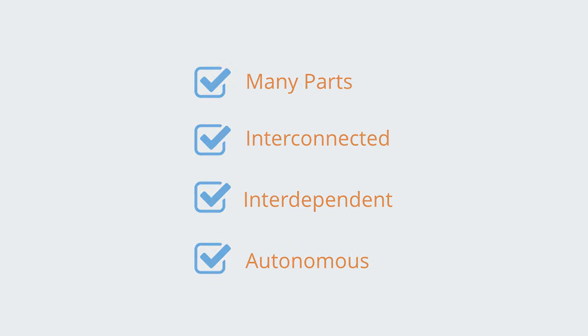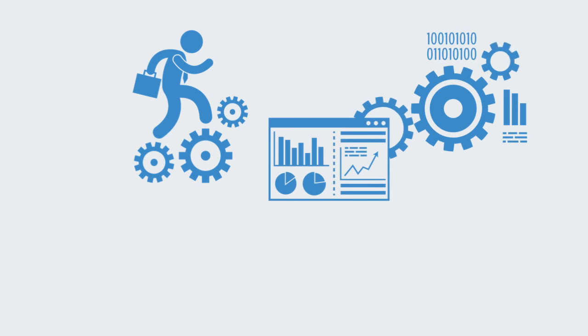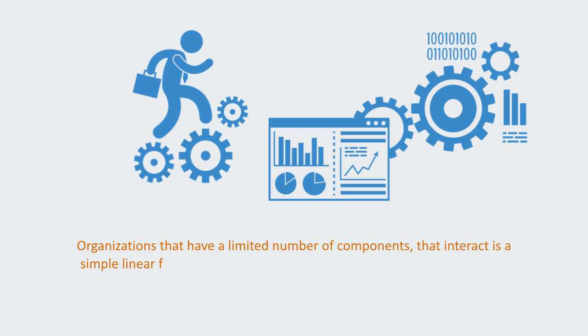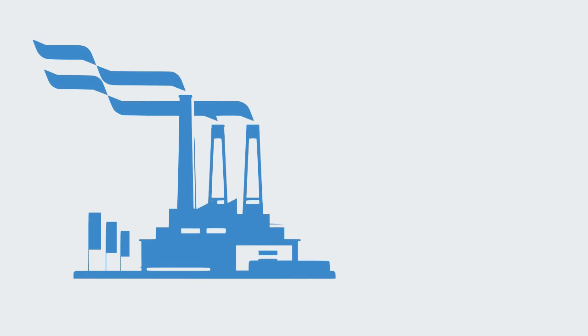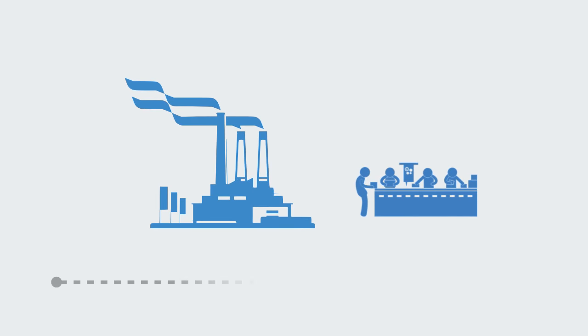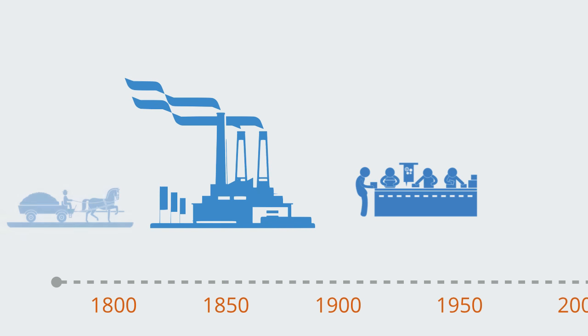We can, and often do, go on using our traditional industrial age management approach to try and manage these organizations. But as we'll be discussing in a future module, the basic principles underlining our traditional management approach were designed for dealing with relatively simple systems. That is, organizations that have a limited number of components that interact in a simple linear fashion at a low level of interconnectivity and where we can constrain those components. A factory would be a classical example of this, and it should not be surprising that the industrial age management approach was designed to manage relatively simple closed systems like factories, because that was exactly what we had to do 100 or 200 years ago when this approach was first formalized.